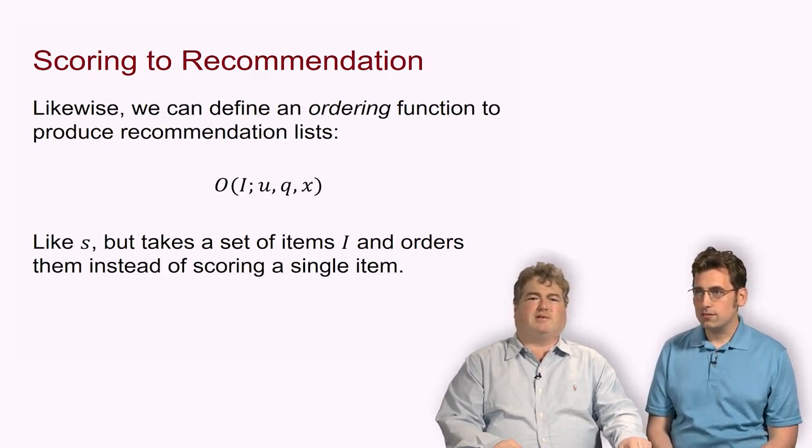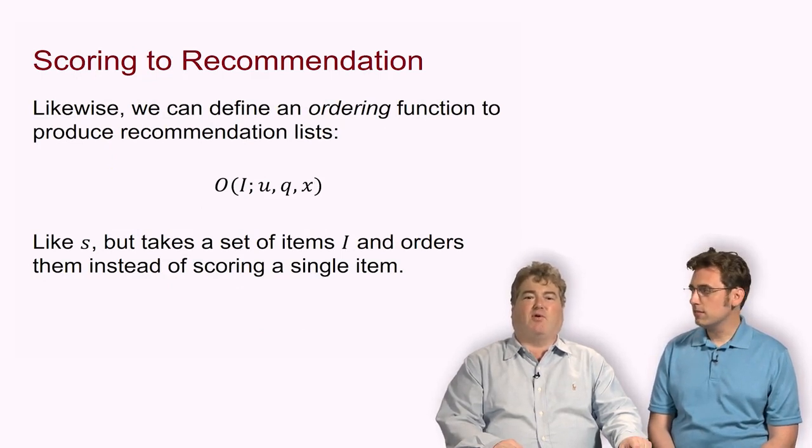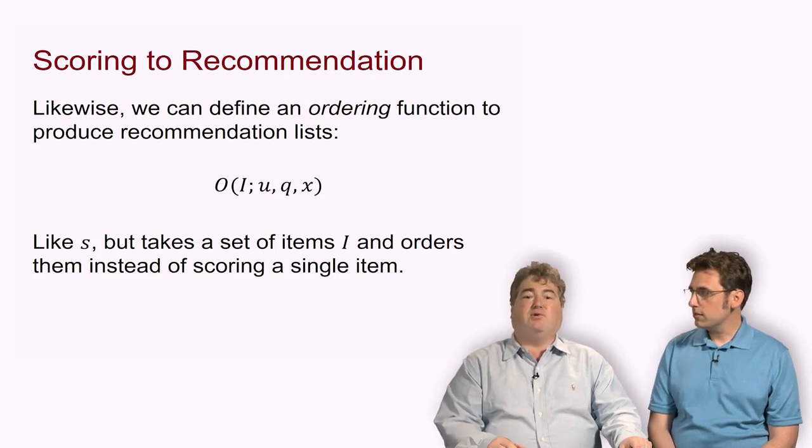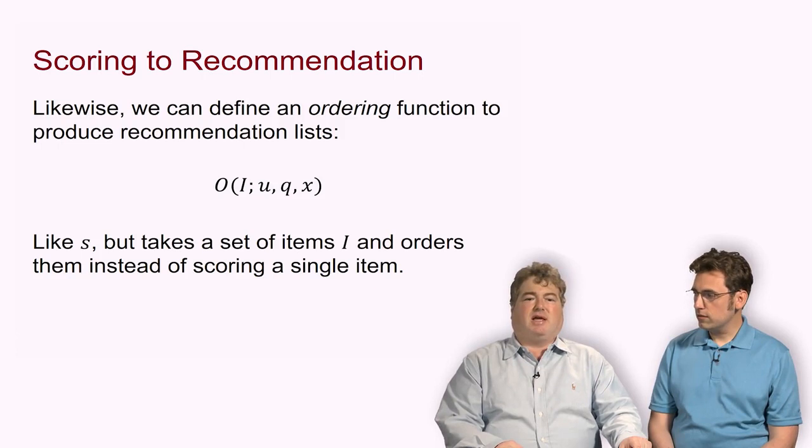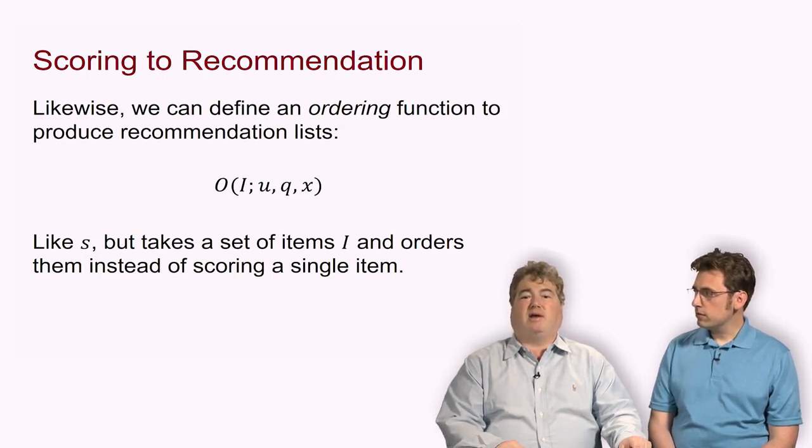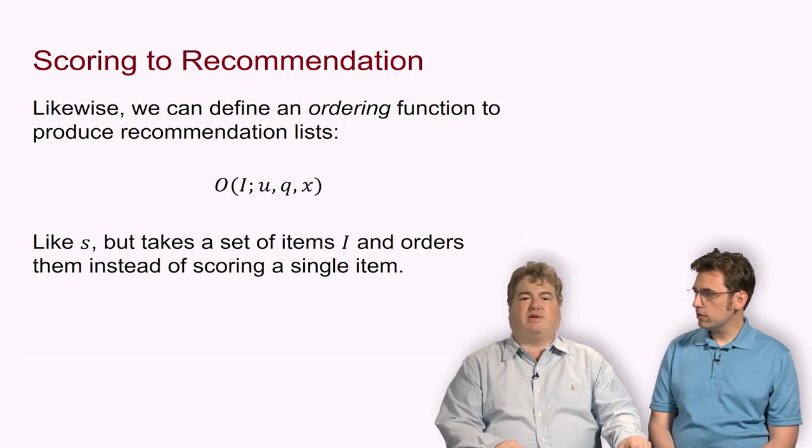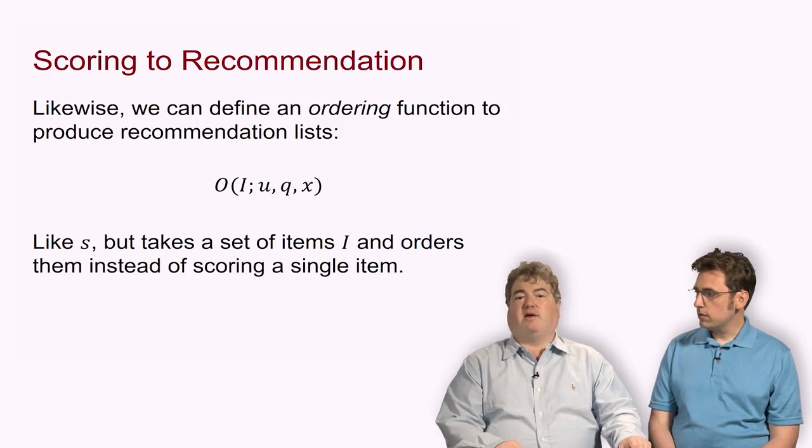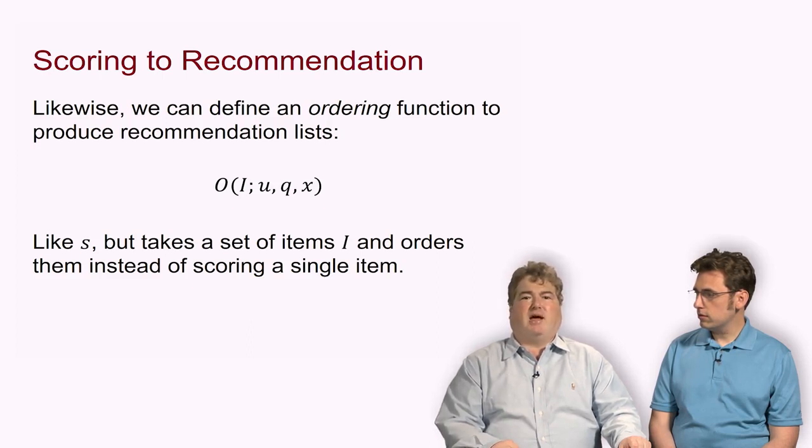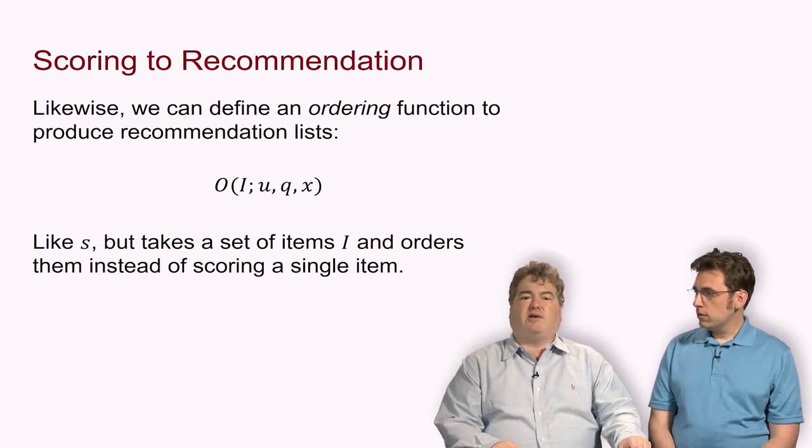But this isn't a course in scoring systems, we're talking about recommender systems, so we have to make that leap from scoring to recommendation. We are interested in scores and can use those to become predictions, but then we want to define an ordering function that, taking a set of items, gives us back the order in which we should present them to users. We can take that same formalization using an O for order, take a set of items that we're recommending from, and score them with relation to a user U, a query if there's a query present, and a context X.